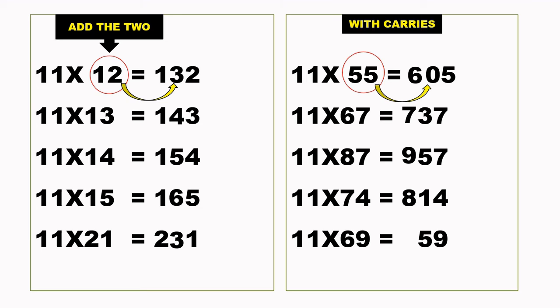11 times 69, our 9 is already there. 6 plus 9 is 15, put 5 down, carry 1. 1 plus 6 is 7, the final answer is 759.